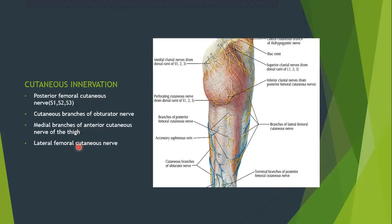These are branches from the posterior femoral cutaneous nerve. The cutaneous branches of the obturator nerve supply the medial aspect, and on the lateral aspect we have the lateral femoral cutaneous nerve. That is the cutaneous innervation of the posterior aspect of the thigh. We have already done the gluteal region — you should look at that if you haven't.